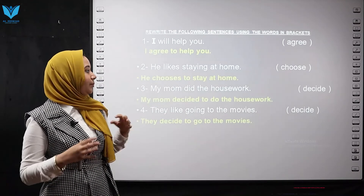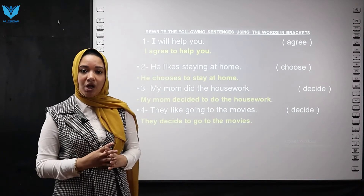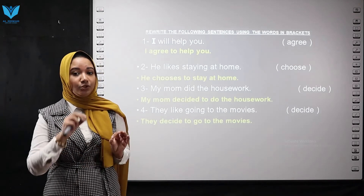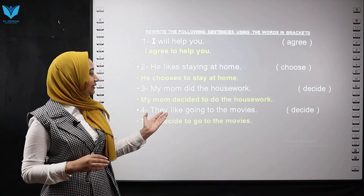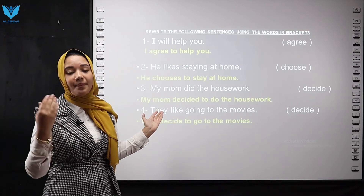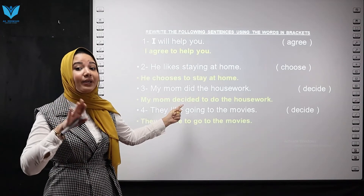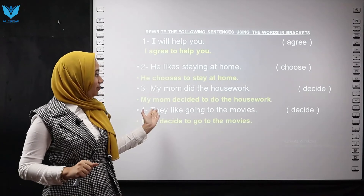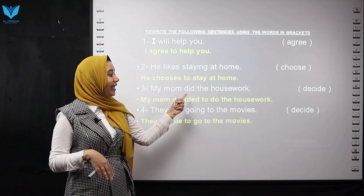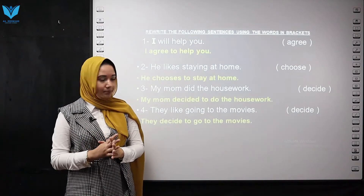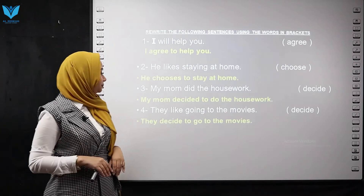Number three: My mom did the housework — use 'decide.' After 'decide,' we put 'to' plus the base form. Since the original verb is in past simple, I keep the tense: 'decided.' The base form of 'did' is 'do.' The answer is: My mom decided to do the housework.